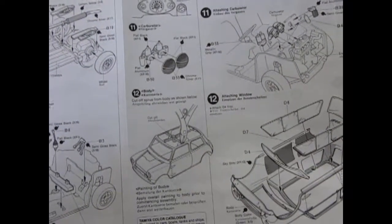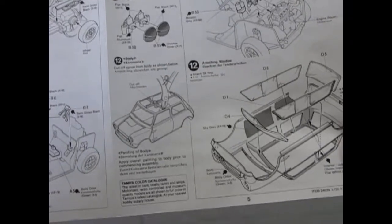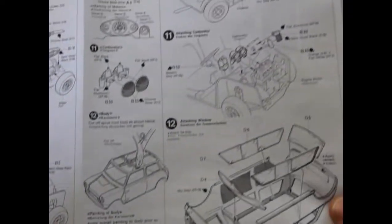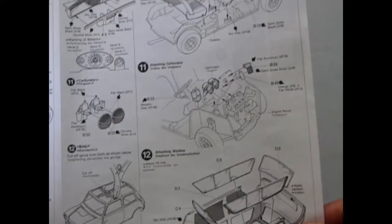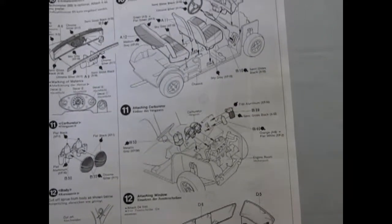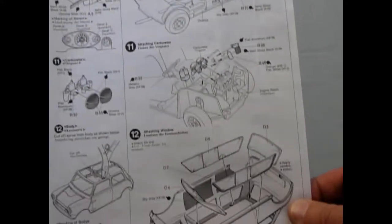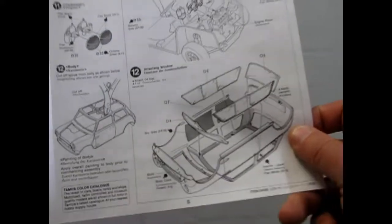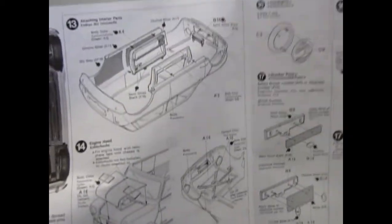You got twin carburetors. I believe those were SU carburetors. It tells you to cut the little bar out of the roof. And then there's your interior going together, and the windows and that sort of thing. If you're a fan of small cars you'll love this model. It's very highly detailed as well.